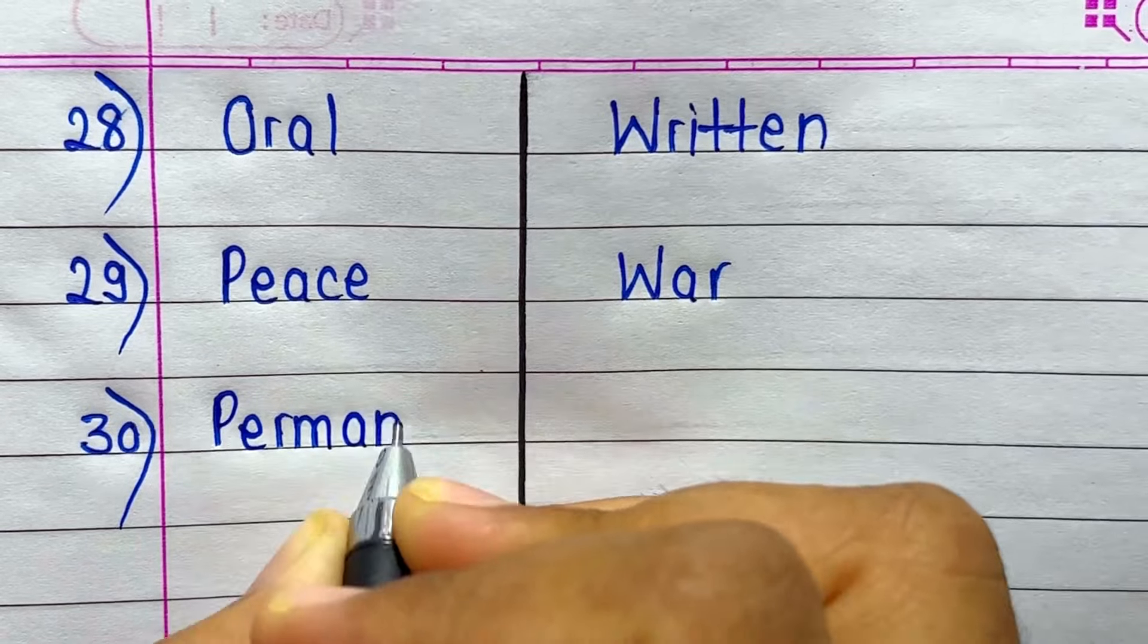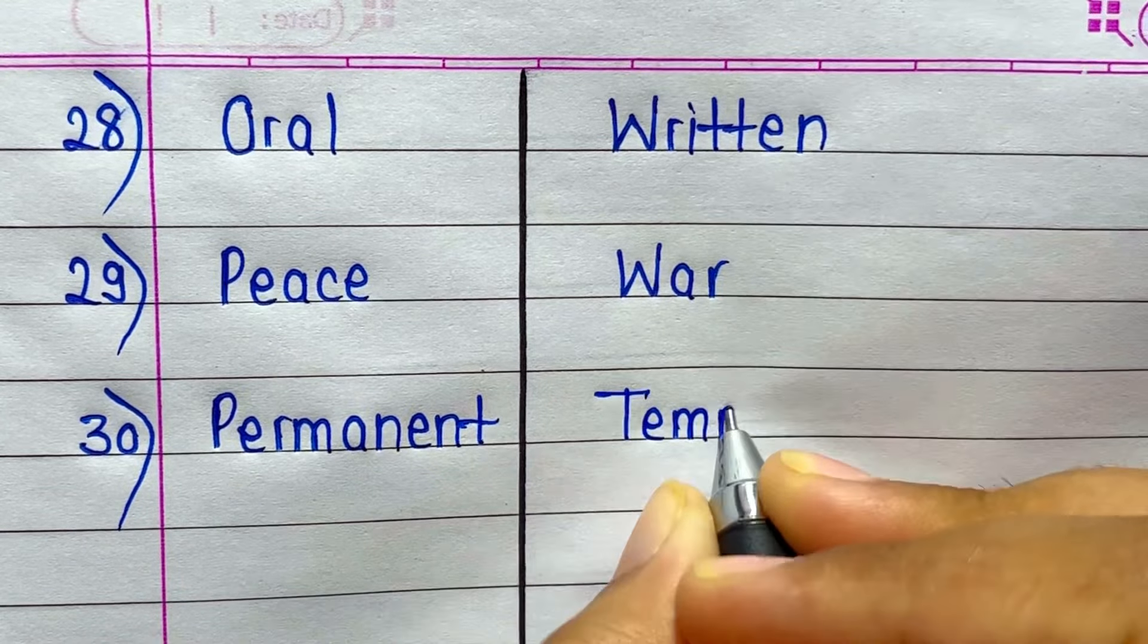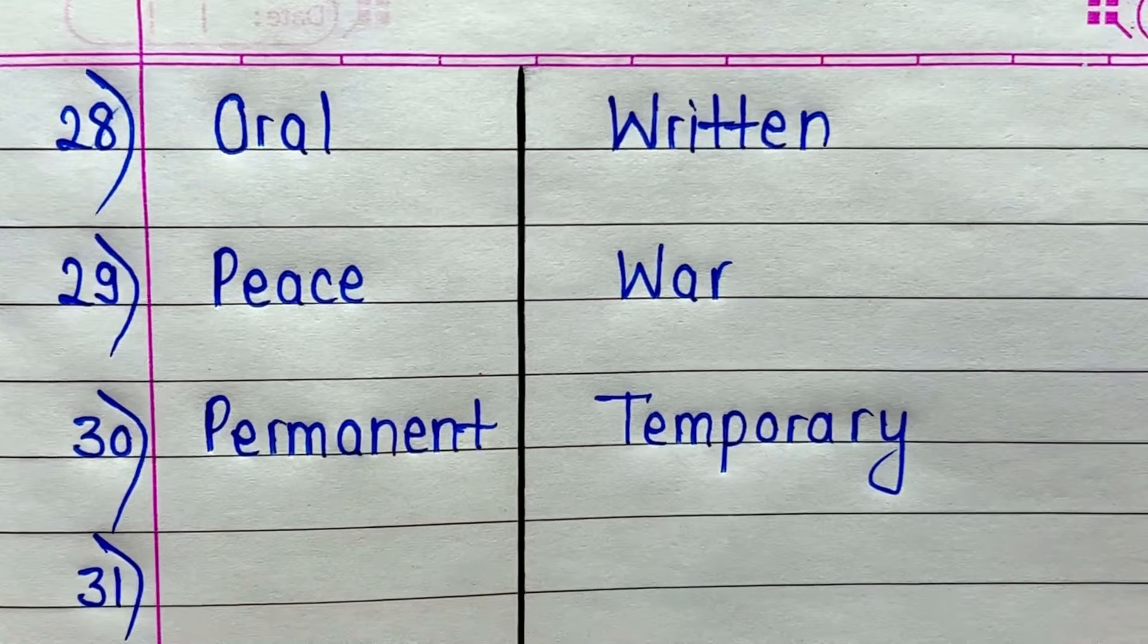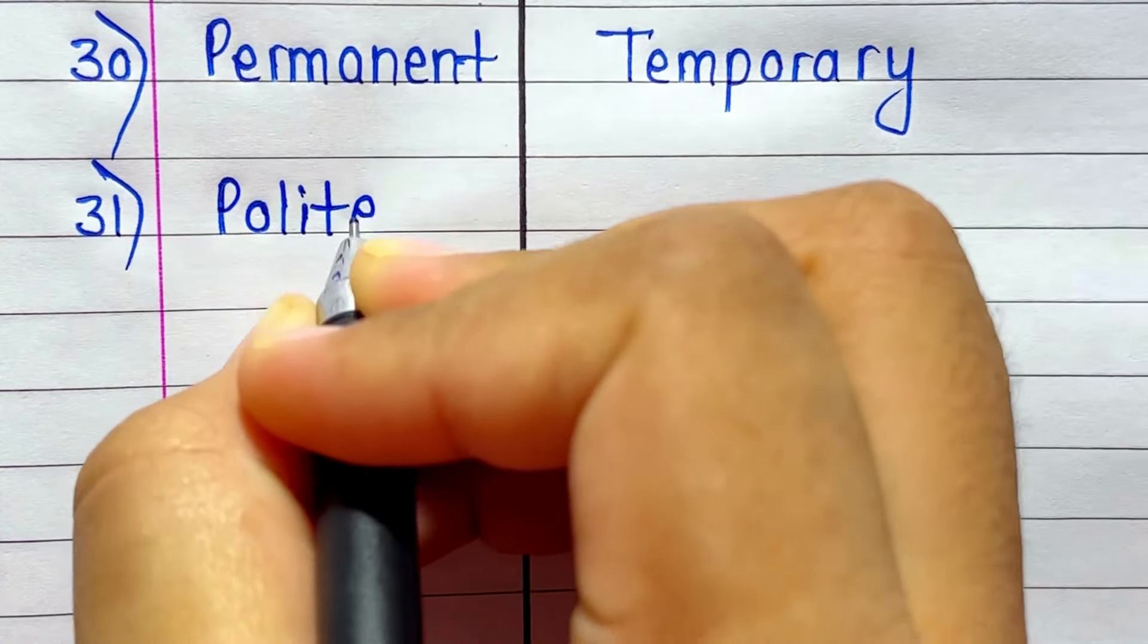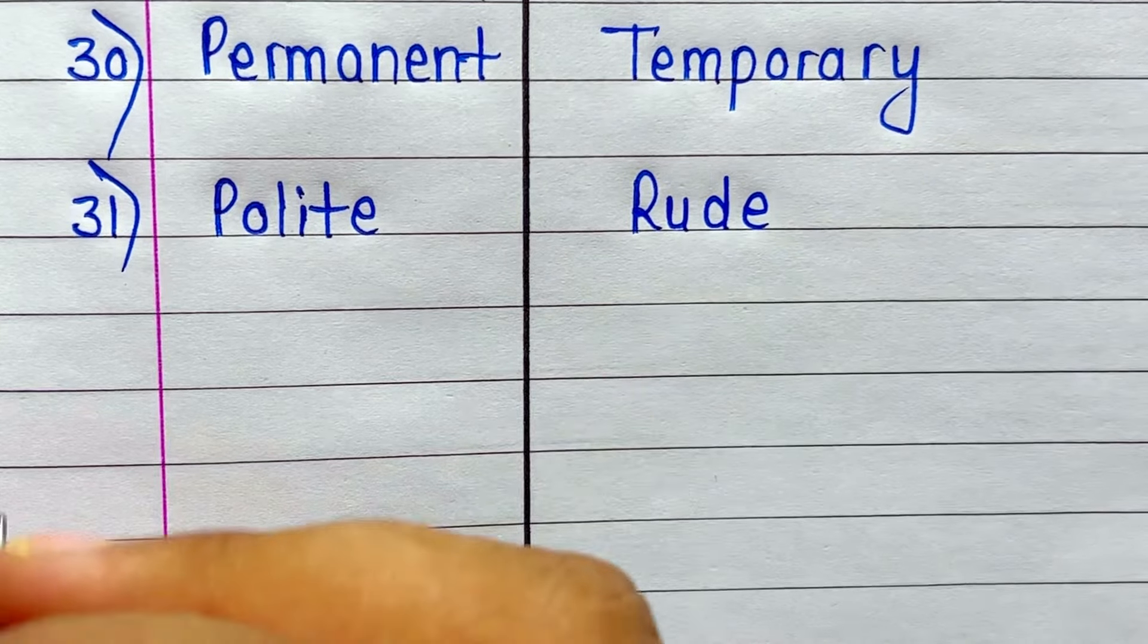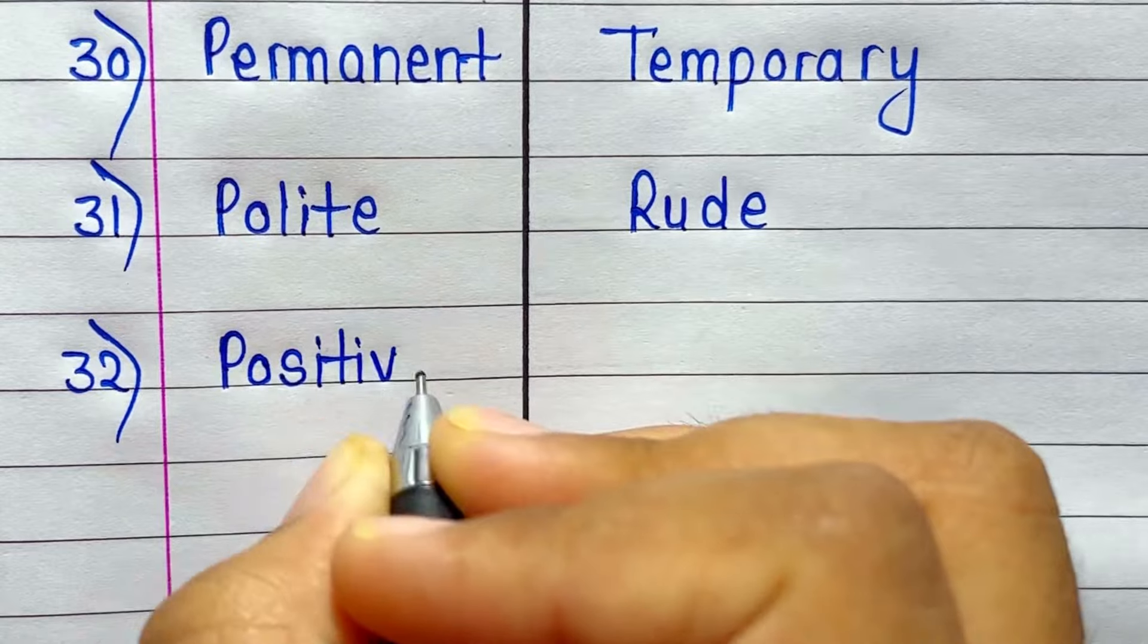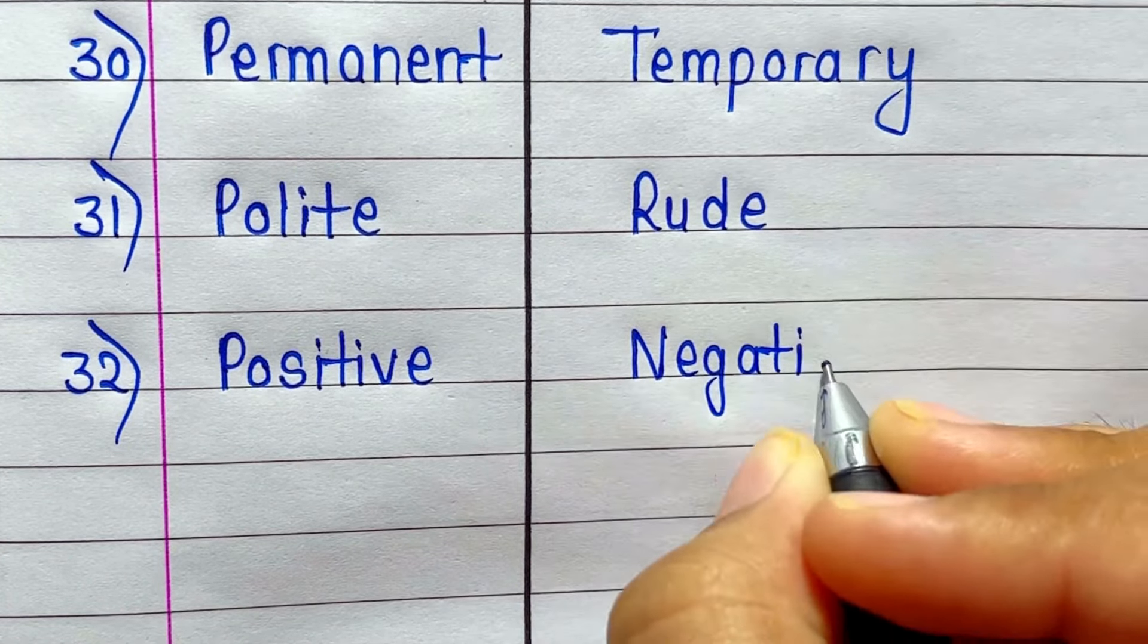Next is Permanent. Antonym of Permanent is Temporary. Antonym of Polite is Rude. Antonym of Positive is Negative.